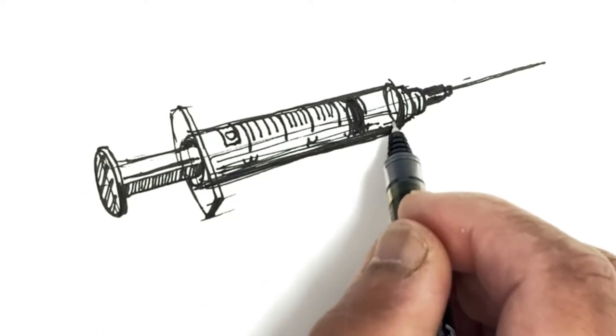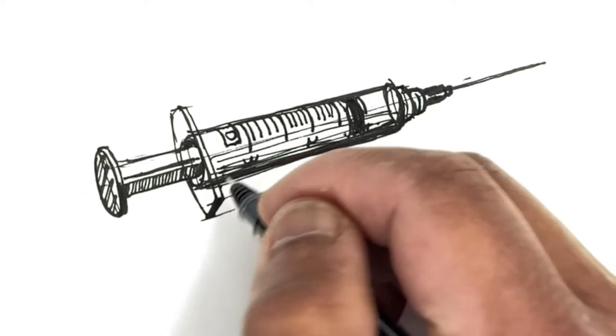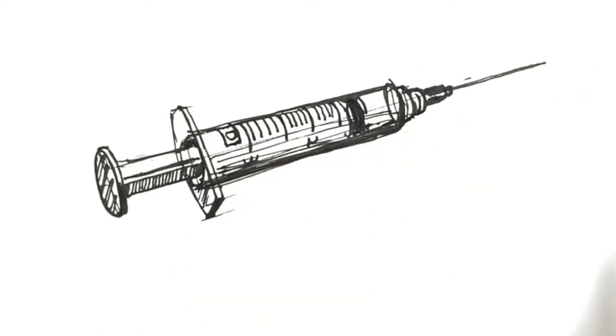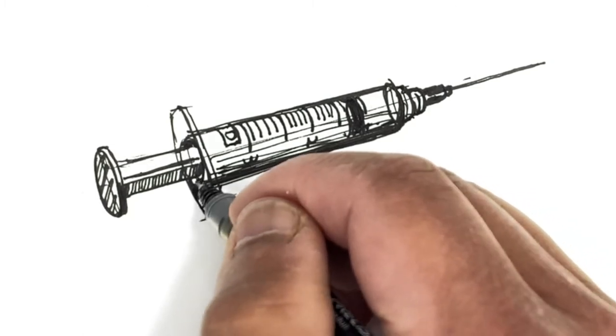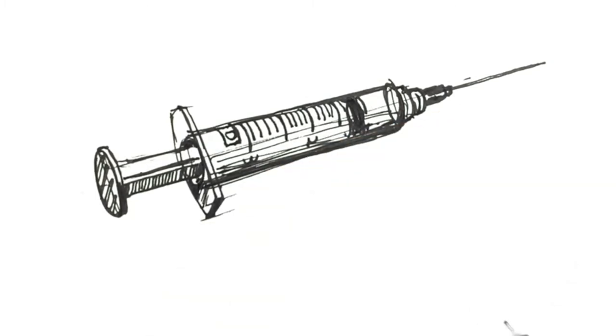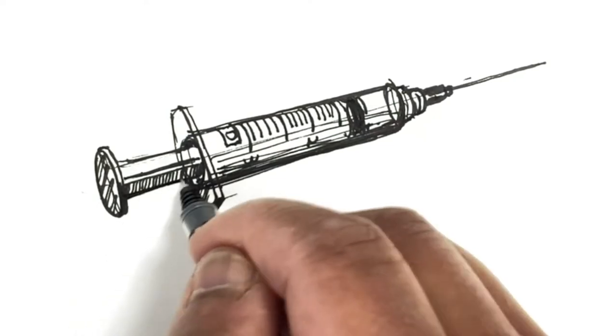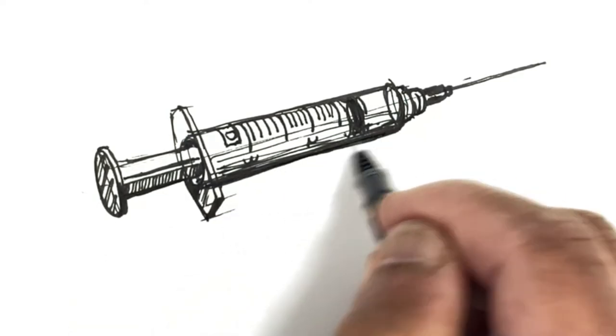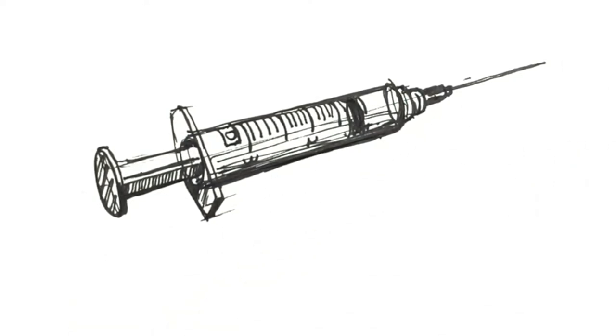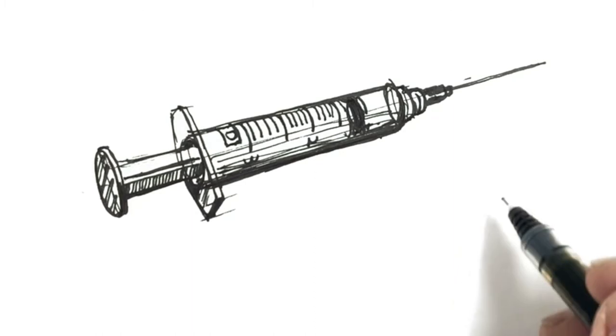I'm adding a little bit more shading here to show the form and some three dimensionality to the syringe. It's just a kind of a rough sketch, but I'll straighten things out a little bit here. Let's draw a second syringe at a different angle.